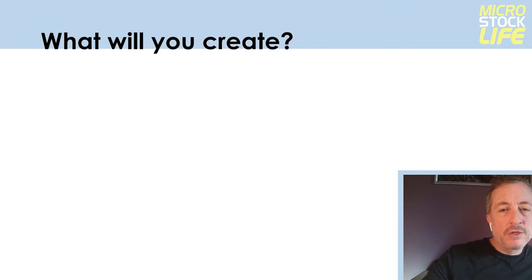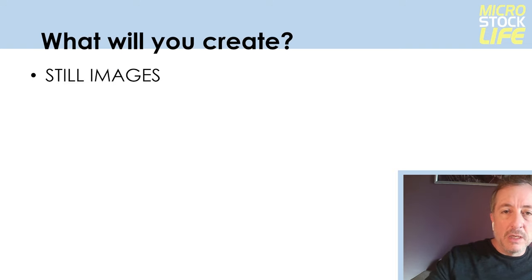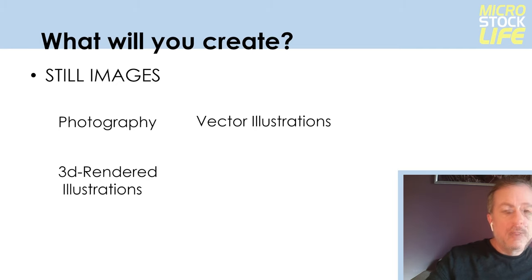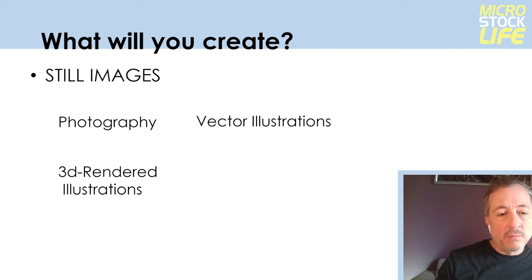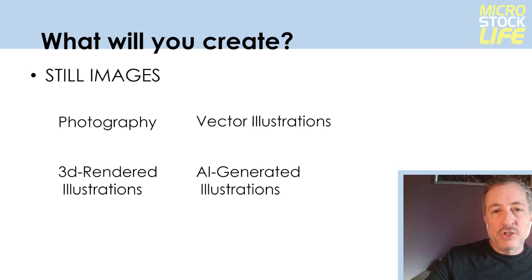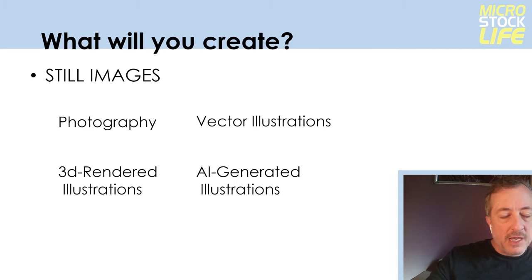Let's talk about the different types of art you can create and submit to the agencies. For still images: photography, of course; vector illustrations created with programs like Adobe Illustrator; 3D rendered illustrations created with programs like Maya or Blender — Blender is a great free program that you can teach yourself, it's not that difficult to pick up; and AI-generated illustrations. We'll go through that toward the end of this course to see how you can create some AI art online and submit it to the agencies.